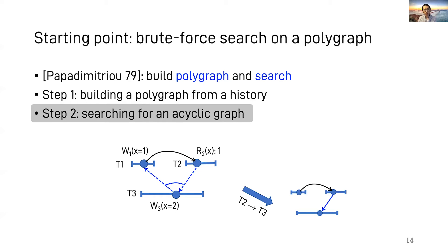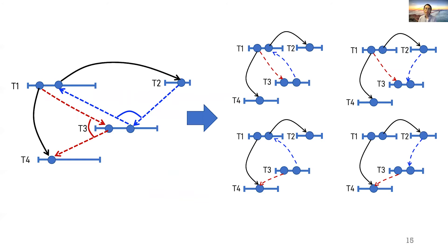This is a simple polygraph, only having one constraint. But one could imagine a polygraph that has many constraints. Then the number of graphs in this family is 2 to the number of constraints. In fact, the problem of searching for an acyclic graph is an NP-complete problem.